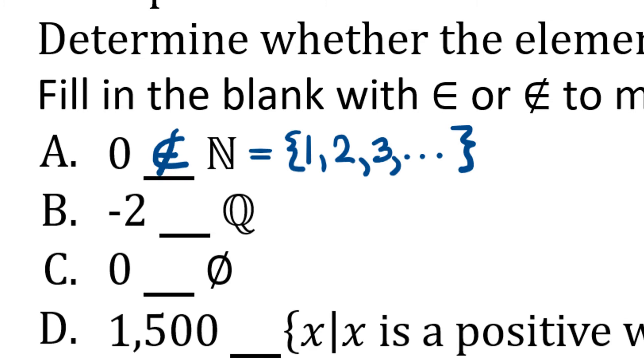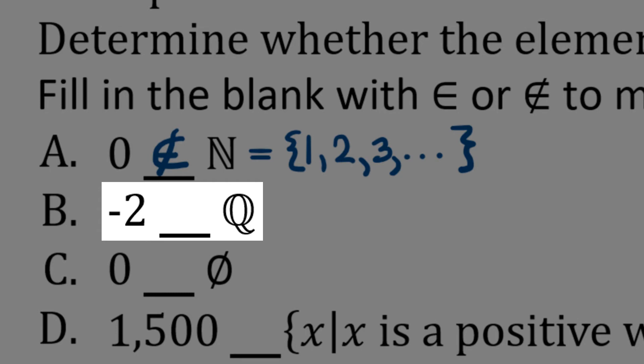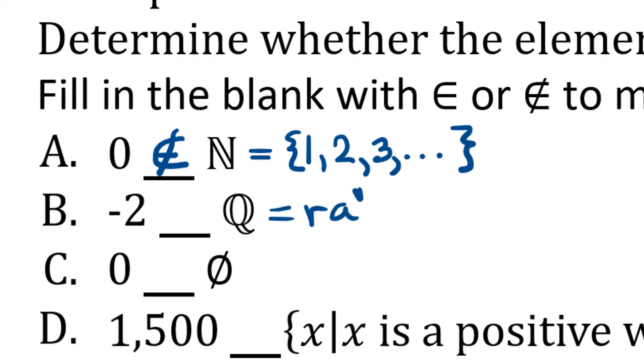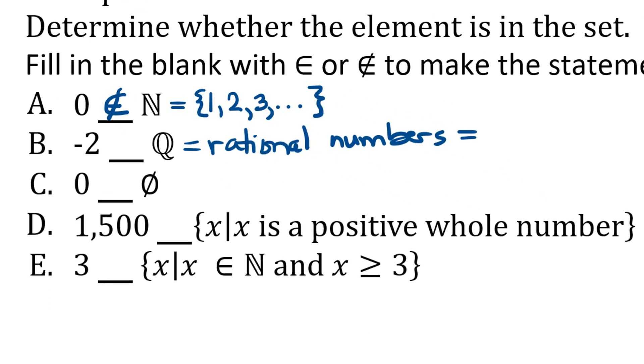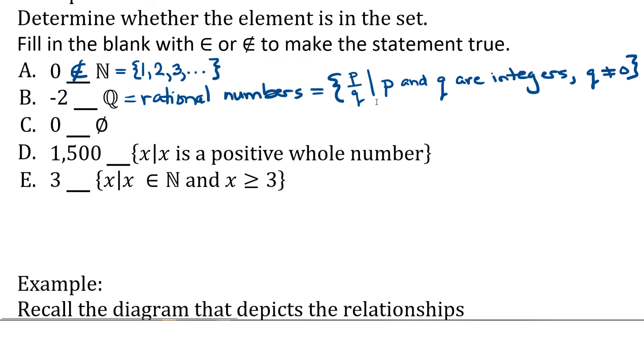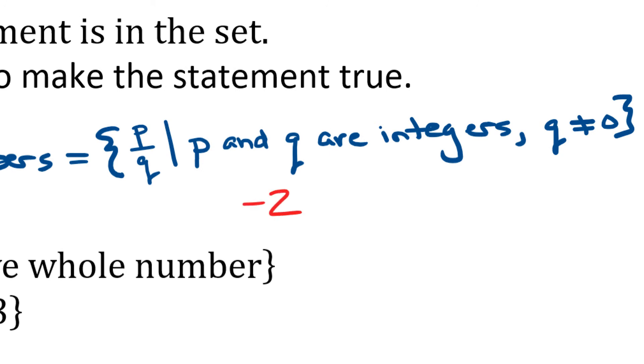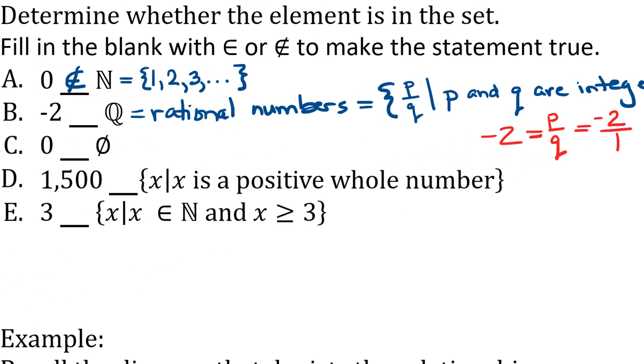Let's look at part B. We want to know is negative 2 an element of, and then we have this bold Q. Do you remember what Q stands for? It comes from the term quotient. Q means quotient. Q is the set of rational numbers. In other words, it's the set of numbers that can be written as fractions. And we use this set builder notation to describe how to construct these fractions by making a ratio, hence the word rational, out of integers, as long as Q is not 0 because we're not allowed to divide by 0. So the question is, can the number negative 2, can that be written in the form of P over Q? If you said yes, you're correct, because you can write any integer as a fraction by just putting it over 1. So yes, negative 2 is an element of the rational numbers.